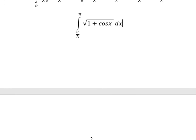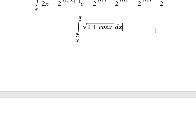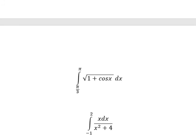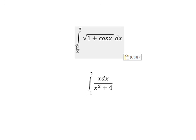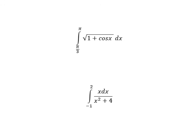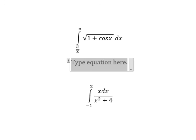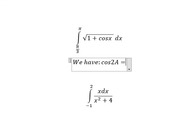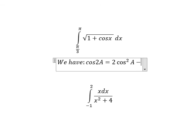The next one. We know that the bounds are from π over 3 to π. With 1 plus cosine x, you always get a positive value. So we have the formula: cosine 2a equals 2 cosine squared(x) minus 1.